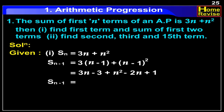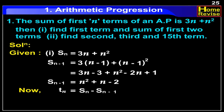Therefore, Sn minus 1 is equal to n square plus n minus 2. Now, Tn is equal to Sn minus Sn minus 1.